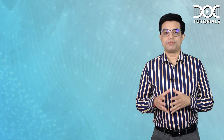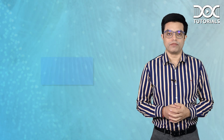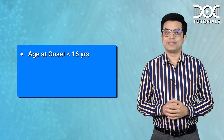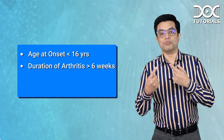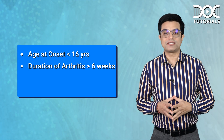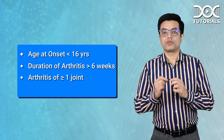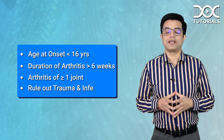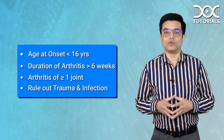Juvenile idiopathic arthritis diagnostic criteria — all four criteria should be fulfilled: age at onset less than 16 years, duration of arthritis more than six weeks, arthritis of one or more joints should be present, and other causes like trauma and infections should be ruled out.